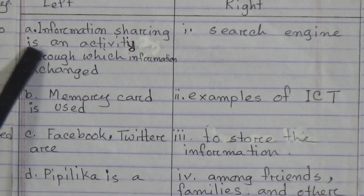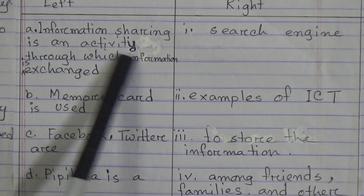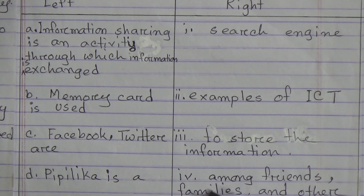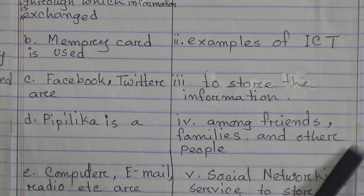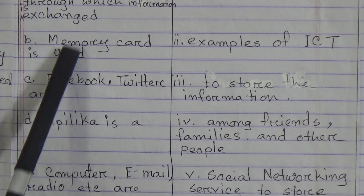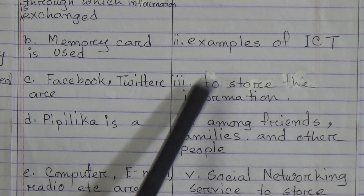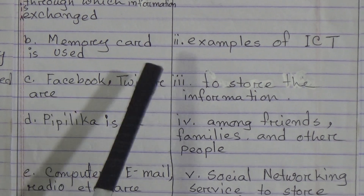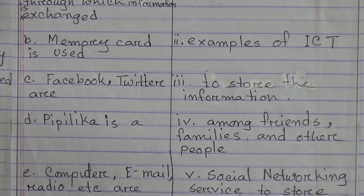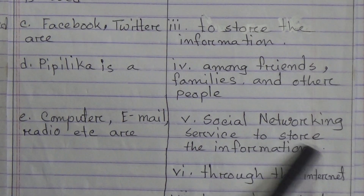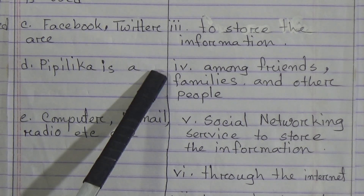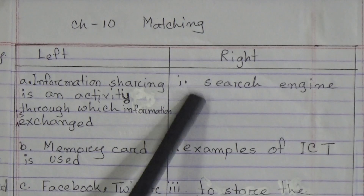Dear students, information sharing is an activity through which information is exchanged — that will be matched with number 4: among friends, families and other people. So A matches with 4. B — memory card is used — that will be matched with number 3: to store the information. So B matches with 3. C — Facebook, Twitter — that will be matched with number 5: social networking service. So C matches with 5. D — Pipilica — it will be matched with number 1: search engine. So D matches with 1.